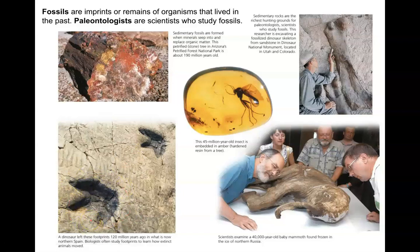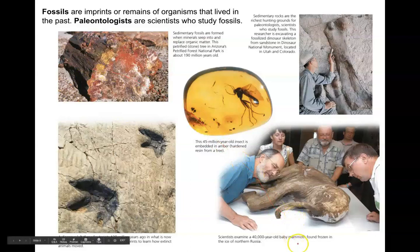Casts can form when dead buried organisms decompose, leaving an empty mold that is later filled by minerals — this is called a cast. Also here is a 40,000-year-old baby mammoth found frozen in northern Russia. The entire organism was kept intact due to the frozen conditions, and this is a fossil that scientists can study today.